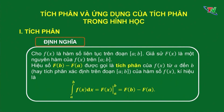Trong định nghĩa này, các em phải chú ý đến một số thuật ngữ. Thứ nhất, f(x) được gọi là hàm số dưới dấu tích phân. Biểu thức f(x)dx được gọi là biểu thức dưới dấu tích phân. A là cận dưới và B là cận trên. Để xác định được giá trị tích phân của hàm f(x) đi từ A đến B, thì chúng ta phải tìm được một nguyên hàm của nó là nguyên hàm F(x). Sau đó, các em thế cận từ A đến B thì ta sẽ tính được giá trị tích phân cần tìm.